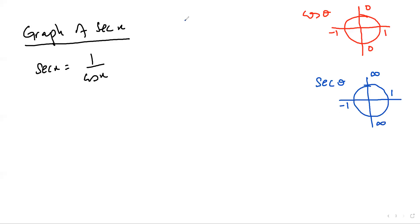So I'll first of all draw here the graph for cos x. We know that this is going to be 0, this is 90, this is 180, this is 270, and this one is 360. So this is your 1 here, this is your minus 1 here.